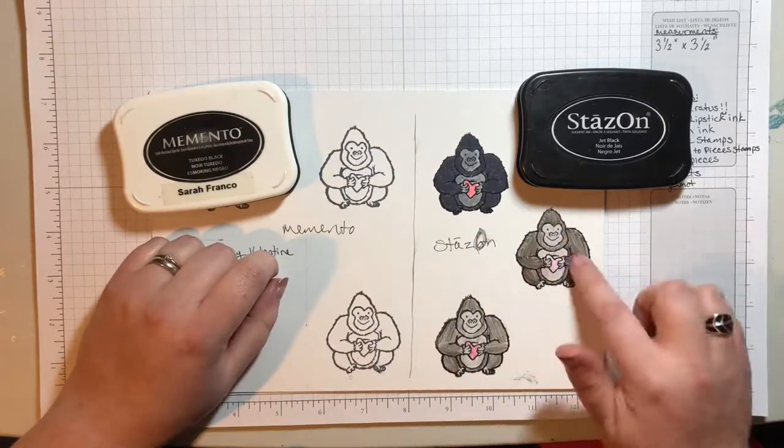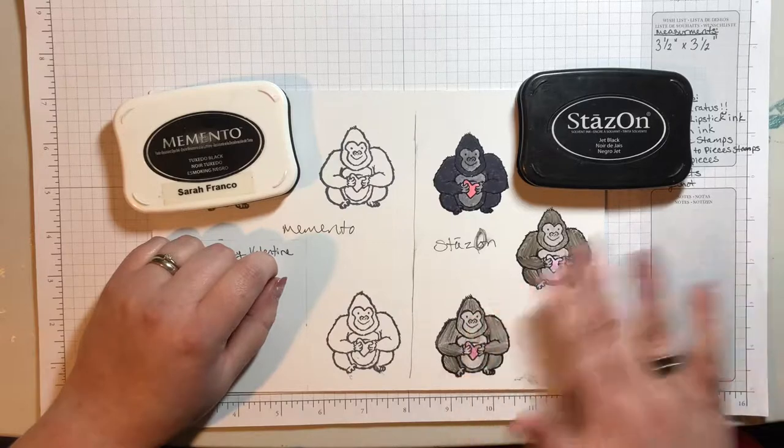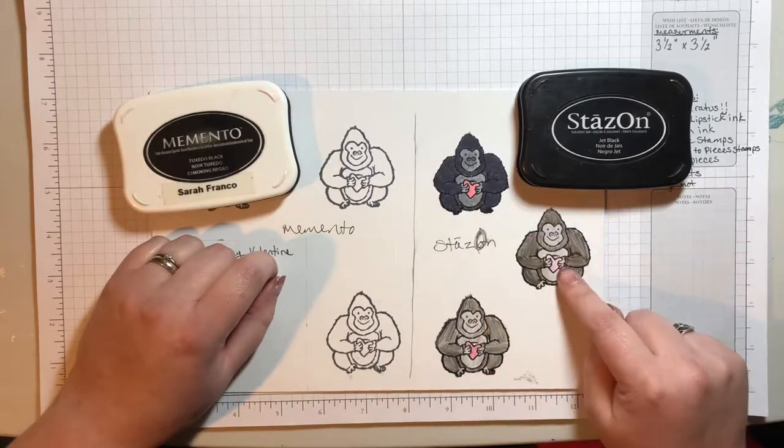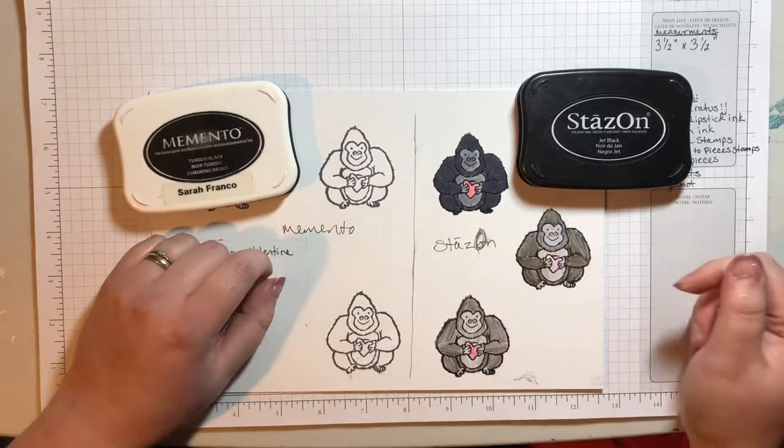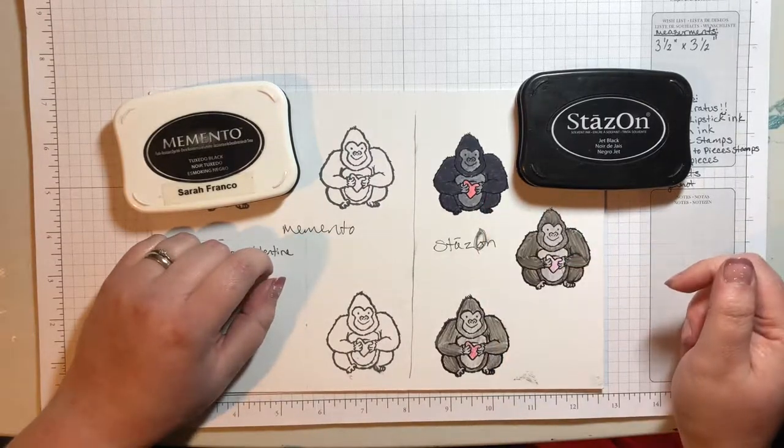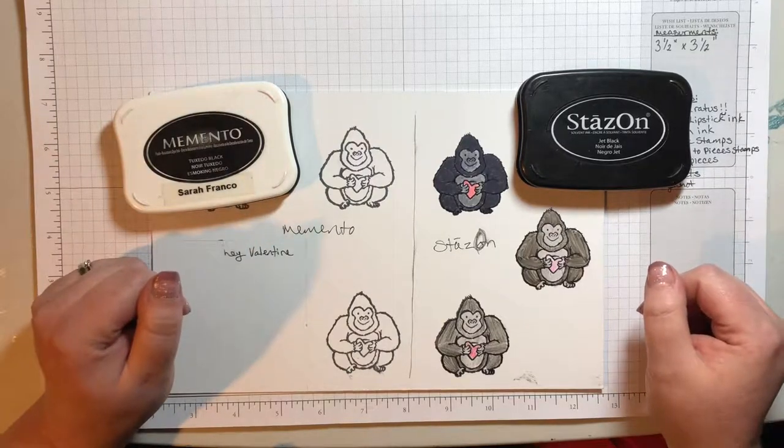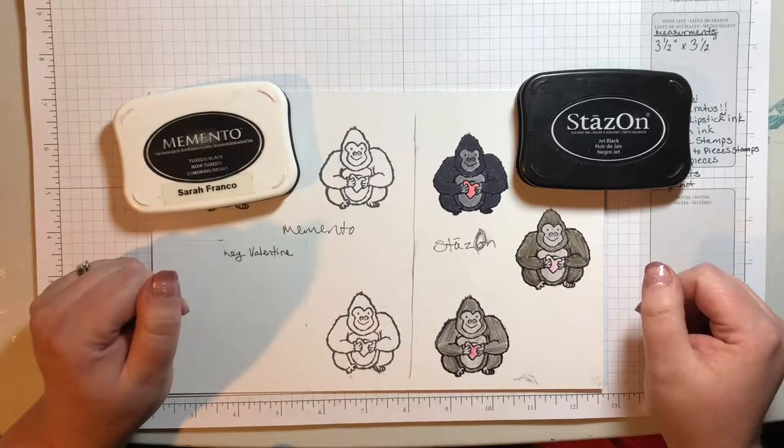Overall, I like this look the best because it's smooth and it dried really quickly. I colored this one first and this one second and this was dry before the Stampin' Write marker one was. Just so you know overall how to color it and stamp it if you are to create this yourself.